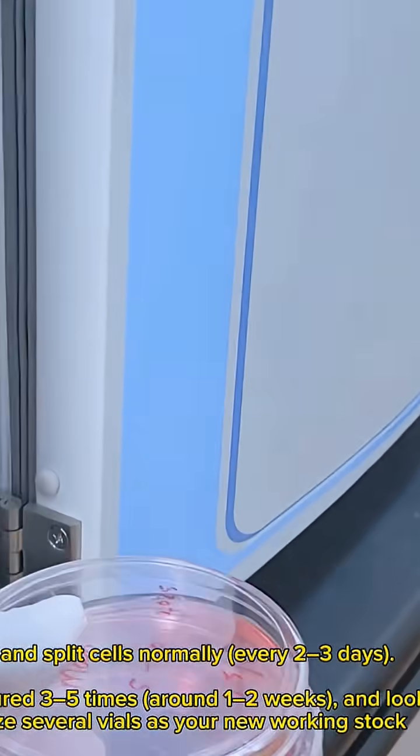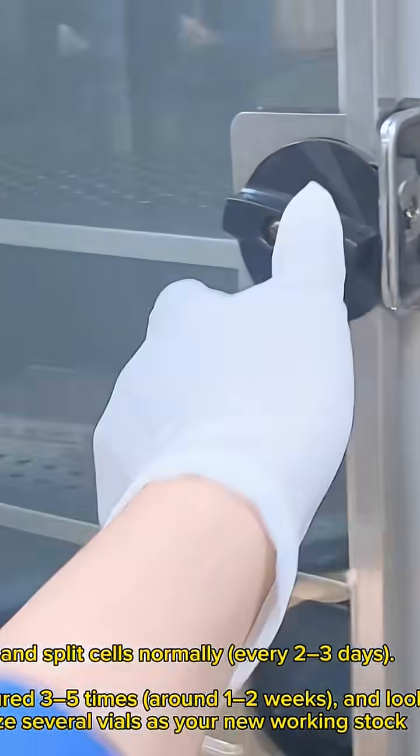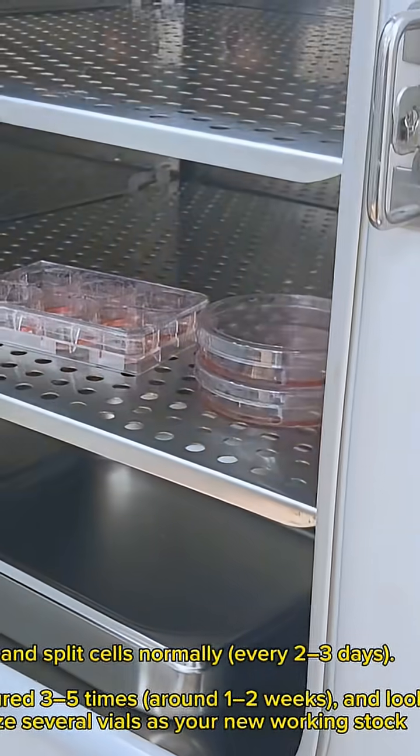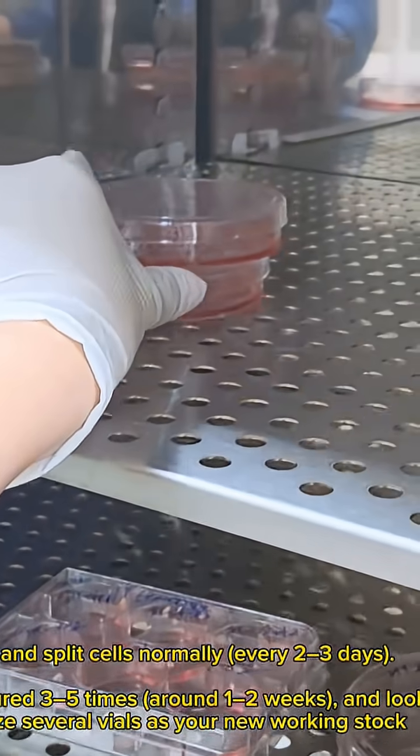Grow and split cells normally every 2-3 days. Once cells have been subcultured 3-5 times, around 1-2 weeks, and look healthy and uniform, freeze several vials as your new working stock.